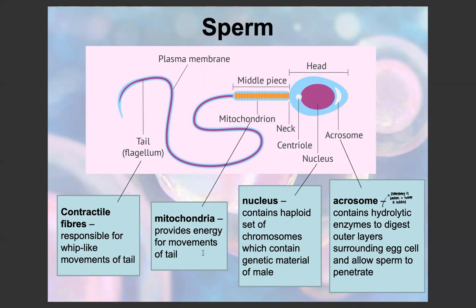In the middle piece, we have the mitochondria, which provides energy for the movements of the tail, allowing the sperm to move. In the tail — also called the flagellum — we have contractile fibers responsible for the whip-like movements of the tail, allowing the sperm to swim. This also explains why mitochondrial DNA is only passed on through the maternal lineage: when a sperm penetrates an egg, only the head penetrates, meaning the mitochondrion does not enter the egg, and therefore the male mitochondrial DNA is not passed on into the zygote.